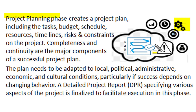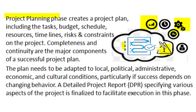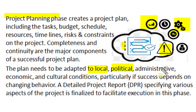Project planning phase creates a project plan for further execution, and this project plan includes the sequence of tasks 1, 2, 3, the detail of allotted budget, all requisite work schedules, details of available resources, timelines for different assigned tasks. All probable risks and constraints are also analyzed in project planning. The completeness and continuity of all tasks is the basic requirement for successful project planning. All plans need to be adapted to local conditions, political environment, administrative, economic, or cultural conditions, particularly if the success of the project also depends on changing behavior of these conditions.